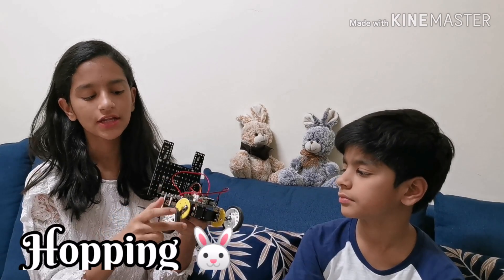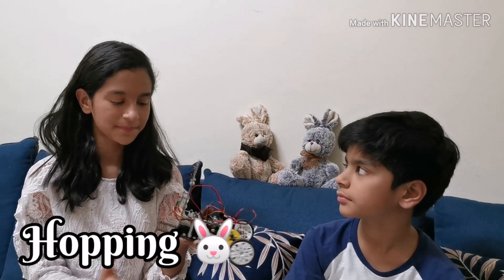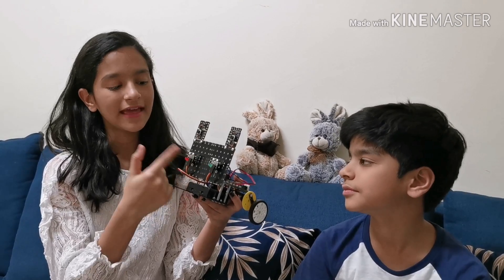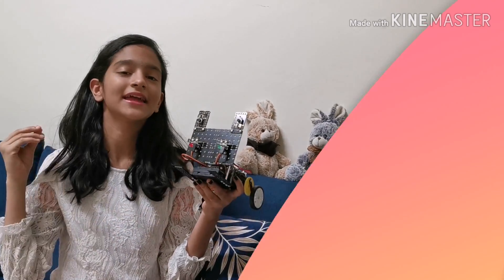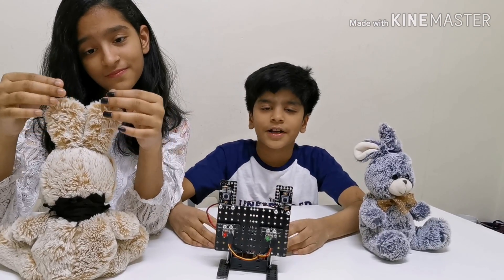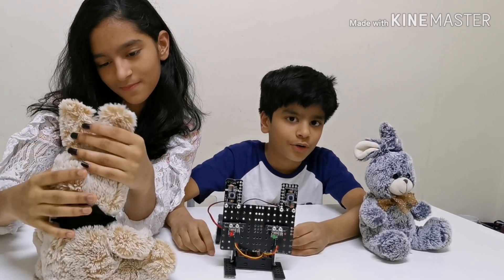It has two wheels. So when it moves, it looks like it's actually hopping. And these LED lights look like its eyes. So we're going to show you how to assemble it and program it. Let's get started.